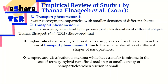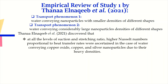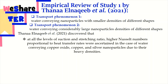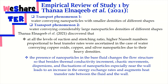Temperature distribution is maxima while heat transfer is minima in the case of ternary hybrid nanofluid made up of small density nanoparticles when suction is small. At all levels of suction and stretching ratio, higher Nusselt numbers proportional to heat transfer rates were ascertained in the case of water conveying copper oxide, copper, and silver nanoparticles due to their heavy densities. The presence of nanoparticles in the base fluid changes the flow structure so that, besides thermal conductivity increment, chaotic movements, dispersions, and fluctuations of nanoparticles — especially near the wall — lead to an increase in energy exchange rates and augment transfer rate between the fluid and the wall.